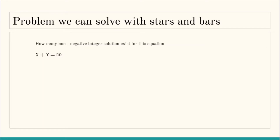The first problem is: how many non-negative integer solutions exist for the equation x + y = 20? We have to count the total number of solutions where x ≥ 0 and y ≥ 0. You can find the total number of solutions by running a loop from 0 to n — each time you put a value in x and see what the corresponding value of y is, so the total number of solutions would be n + 1.